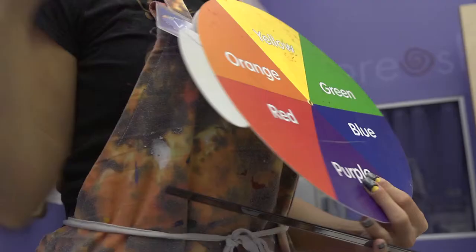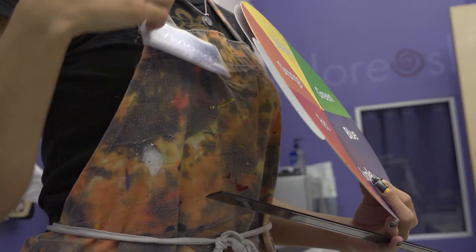So when you guys paint today, you're going to have to choose a color scheme. You're going to have to choose primary, secondary, warm, cool, analogous. There's one more, complementary. You guys know what that means, right? What does it mean?